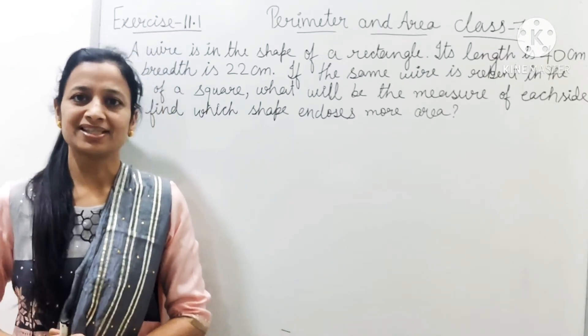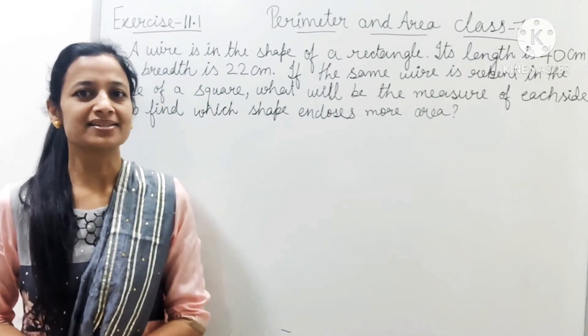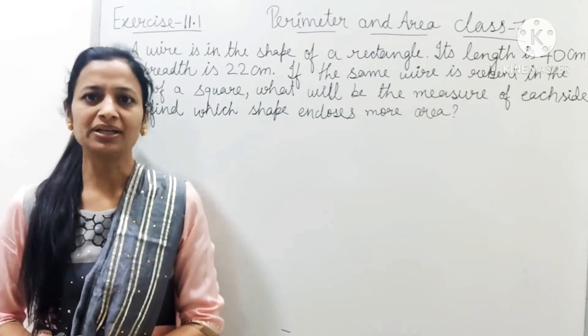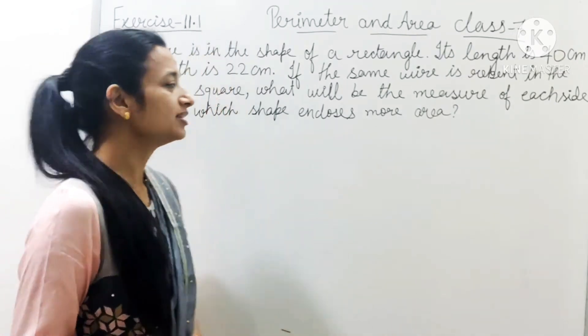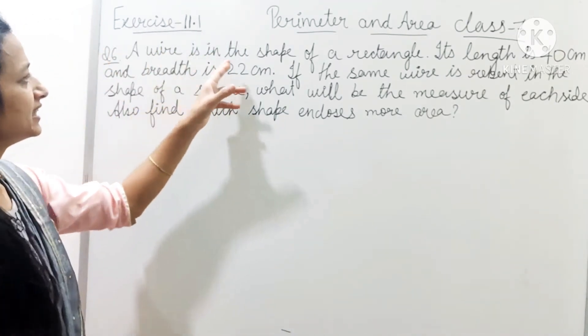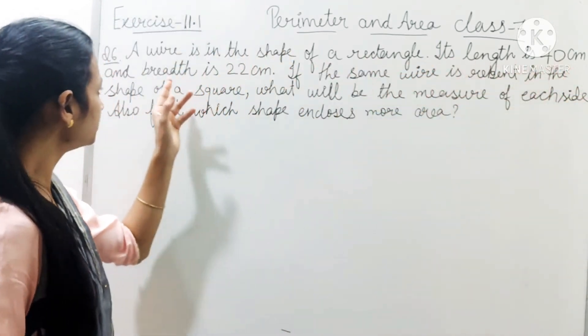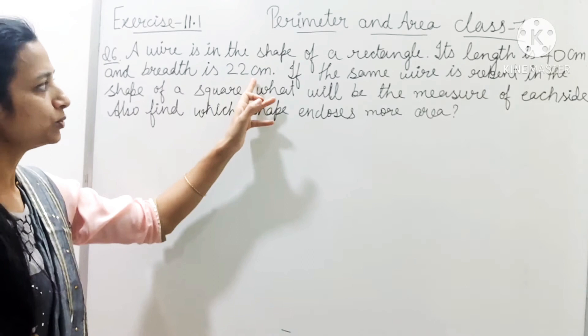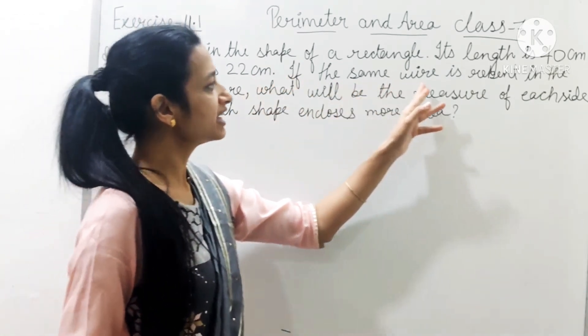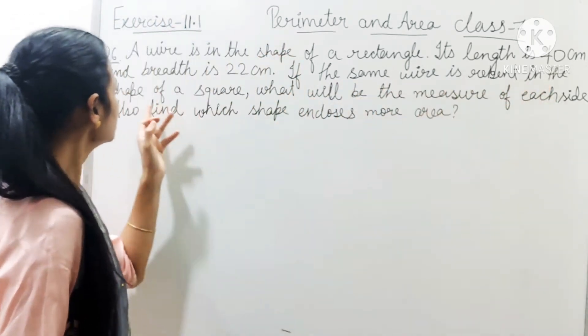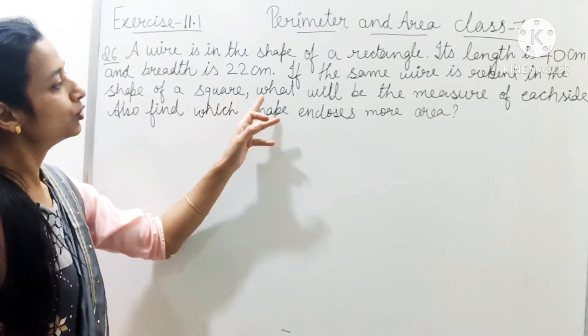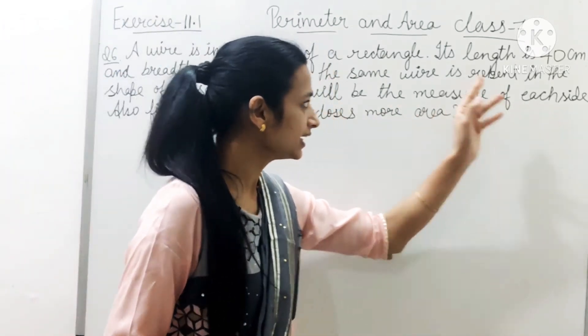Hello everyone, my name is Desi and in this video I am going to explain exercise 11.1 question number 6. A wire is in the shape of a rectangle. Its length is 40 cm and breadth is 22 cm. If the same wire is re-bent in the shape of a square, what will be the measure of each side? Also find which shape encloses more area.